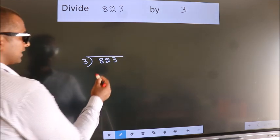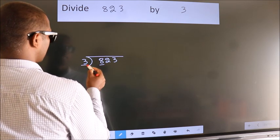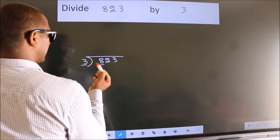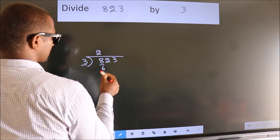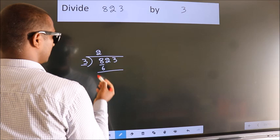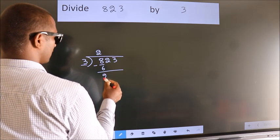Next, here we have 8, here 3. A number close to 8 in 3 table is 3 2's 6. Now we should subtract. We get 2.